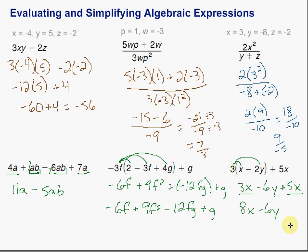In summary, when evaluating algebraic expressions we'll be given values for the variables — simply insert those into our expression and simplify to get our answer. For simplifying, sometimes we need to use the distributive property to get rid of parentheses. Remember, the only things we can combine are the same variables to the same powers. Hope that was helpful — good luck!